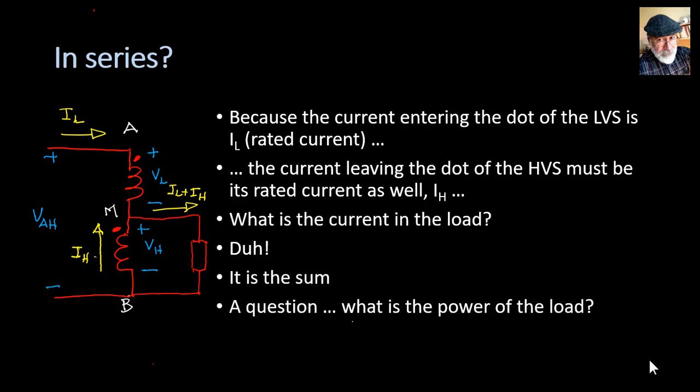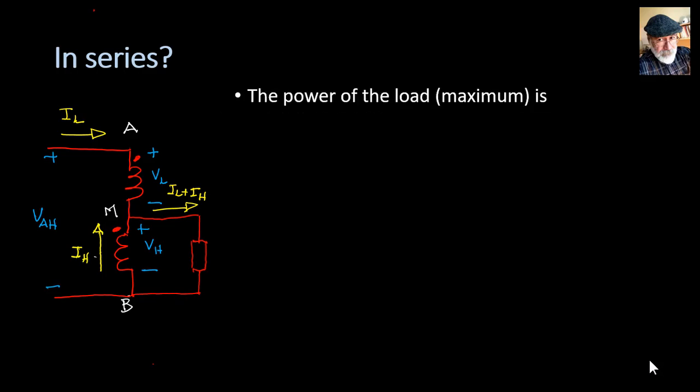I have a question for you. What is the power of the load? Multiply them. Of course, the power of the load is the maximum power that we can feed with this arrangement. Why? Because I already have both windings at the rated current, so I cannot exceed that. So the maximum power of the load is VH, the rated voltage of the high side, multiplied by the sum of the rated currents of the low side and the high side.